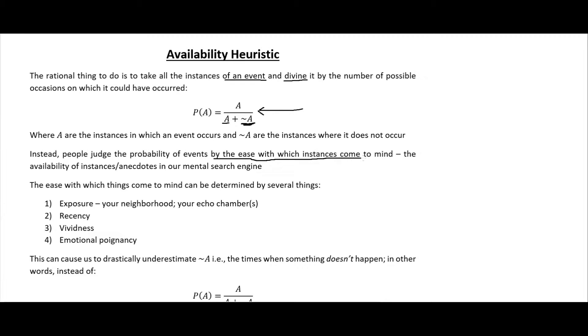Instead, people judge the probability of events by the ease with which instances come to mind. This is the thing with availability heuristic that distinguishes it from confirmation bias - it's like a sampling bias by the little statistician in our heads. The availability of instances or anecdotes in our mental search engine.